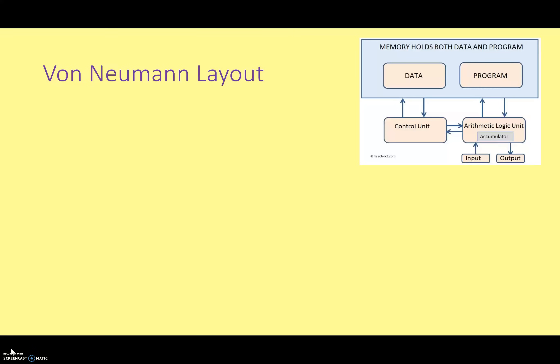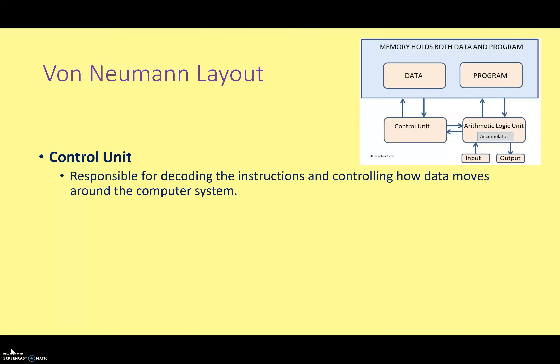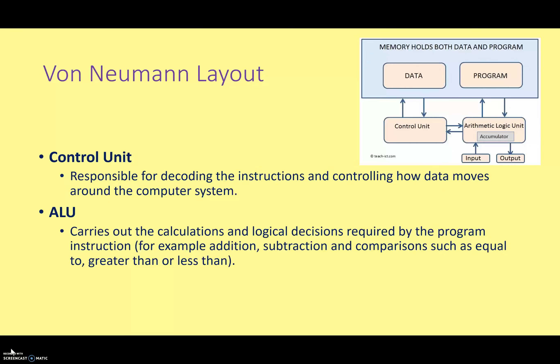The control unit is responsible for decoding the instructions from the program and controlling how data moves around the computer system — this is why we call it a control unit. We have the arithmetic logic unit, or ALU, and this basically does all the math and logical functions. It carries out all the calculations — all the addition and subtraction, all the greater than and less than — really the key processing that we think of when we think of a computer system.